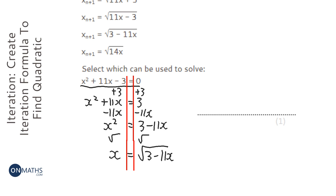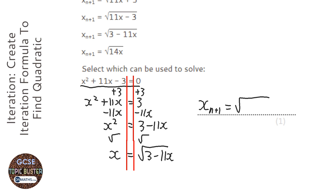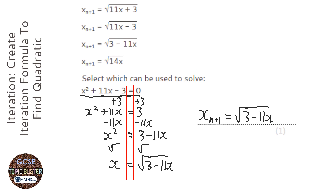That is one of the options, so it's going to be this one here. The other options just can't work — you can't rearrange them to get x equals that — so the only one you can write as x equals that expression is the third one.